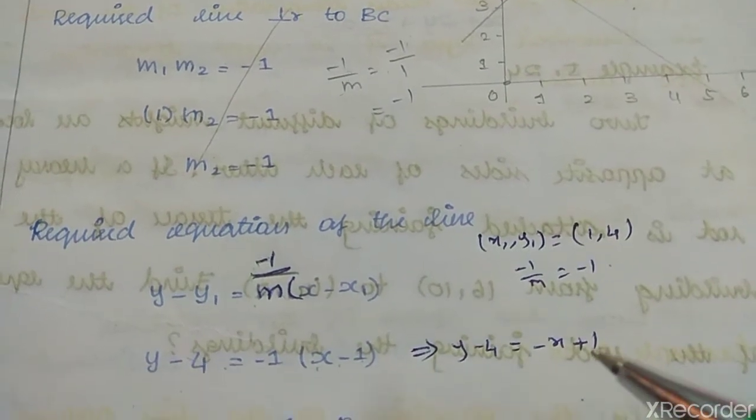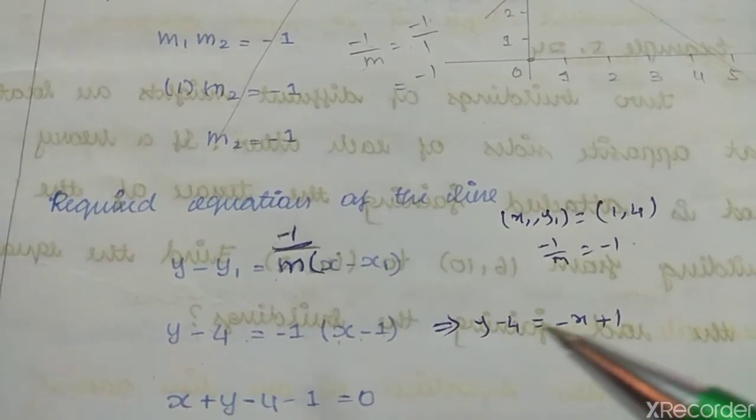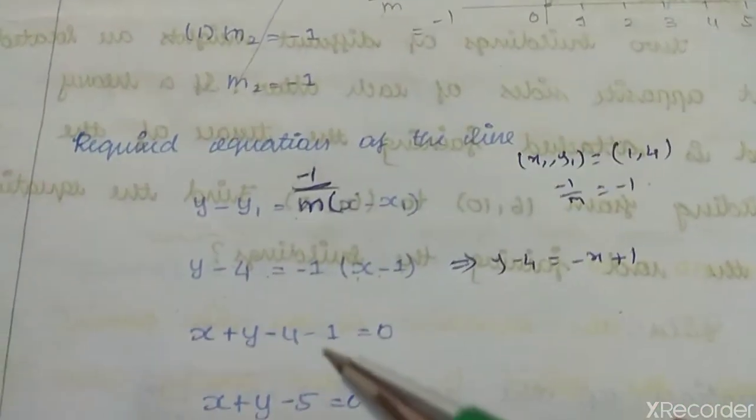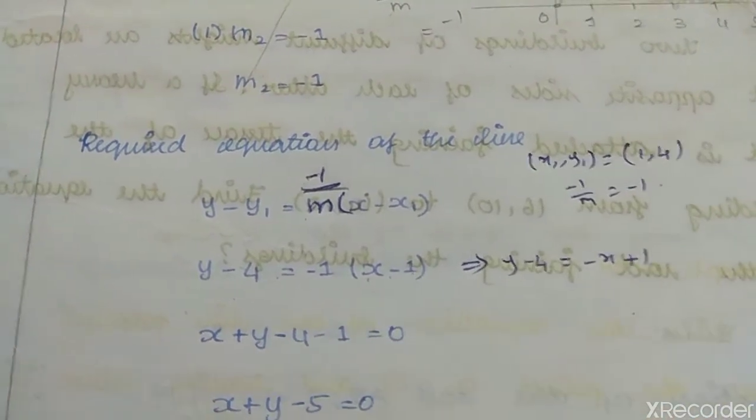Rearranging to standard form: x + y - 4 - 1 = 0, so x + y - 5 = 0 is the final equation.